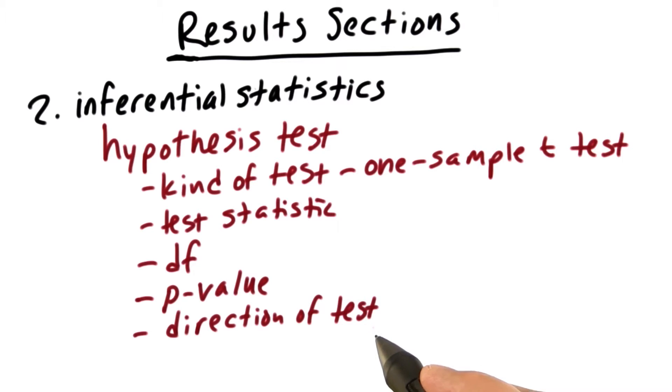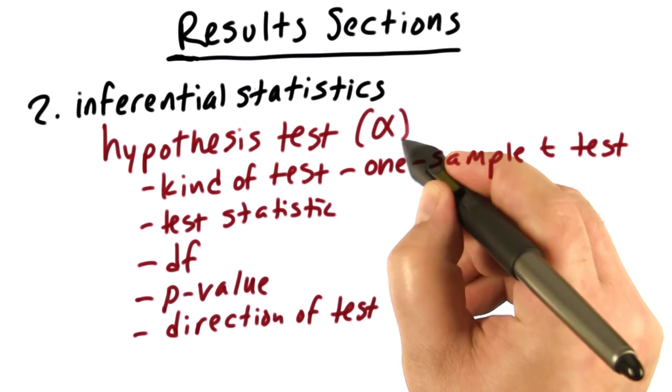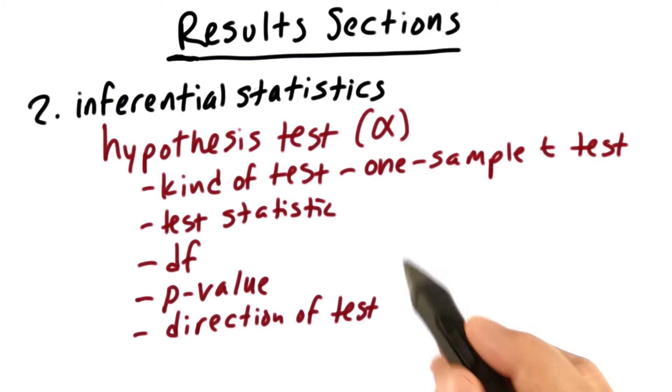Next, if applicable, give the direction of the test. For example, is it a one-tailed test or a two-tailed test? And always provide the alpha level. Always let the reader know what alpha level you used to make your decisions.